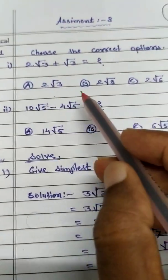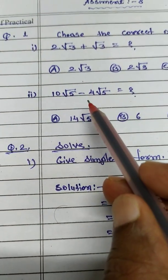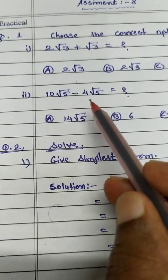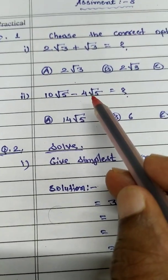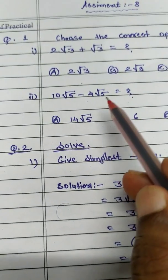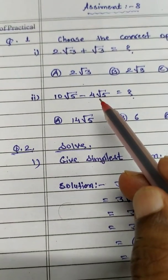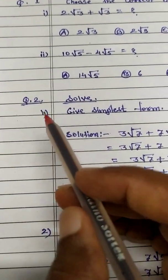Now we have to choose the correct option. Second example is 10 root 5 minus 4 root 5. In this case also this is like surd because degree is 2. Now we take this root 5 common and 10 minus 4.